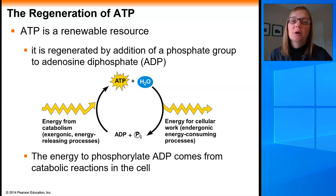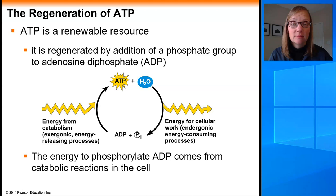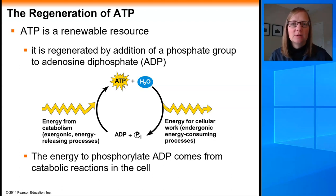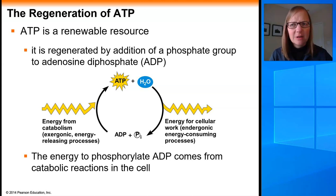If it's an exergonic process, is it spontaneous? Hopefully you said yes, because spontaneous processes have a negative delta G — they release energy and do not require any input of energy to get them going. So if hydrolysis of ATP is a spontaneous process, why doesn't all of the ATP in the cell just spontaneously break apart?